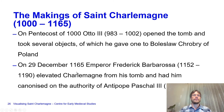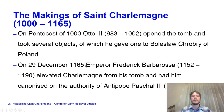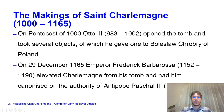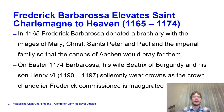On the 29th of December, 1165, the day of Saint David, King of Israel in the Catholic calendars of the region, Emperor Frederick Barbarossa elevated Charlemagne from his tomb and had him canonized on the authority of Antipope Pascal III. There was a schism in Rome between Alexander III, who later prevailed as the Catholic Pope, and three popes of Frederick Barbarossa's choosing, of which the second was Pascal III. In return for his support, Pascal III canonized Charlemagne in order to elevate Frederick Barbarossa's emperorship.